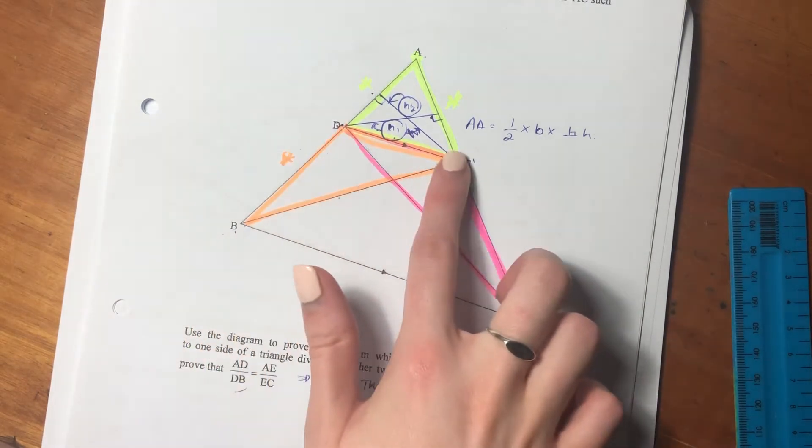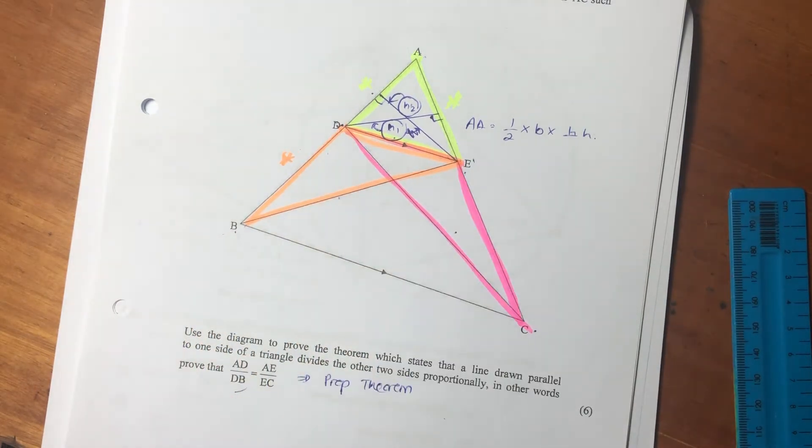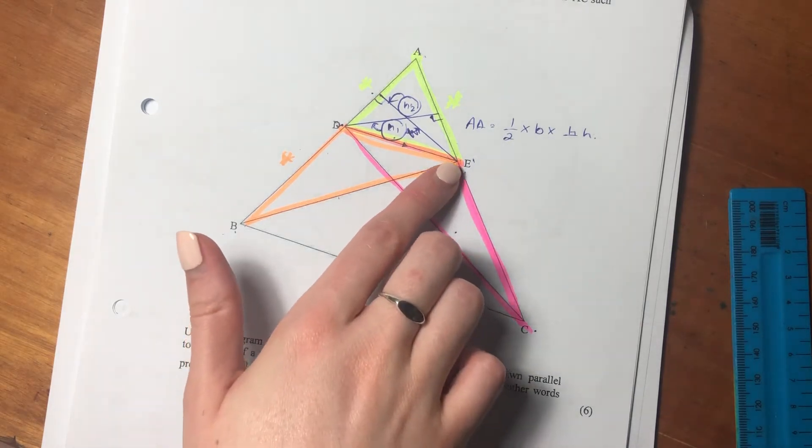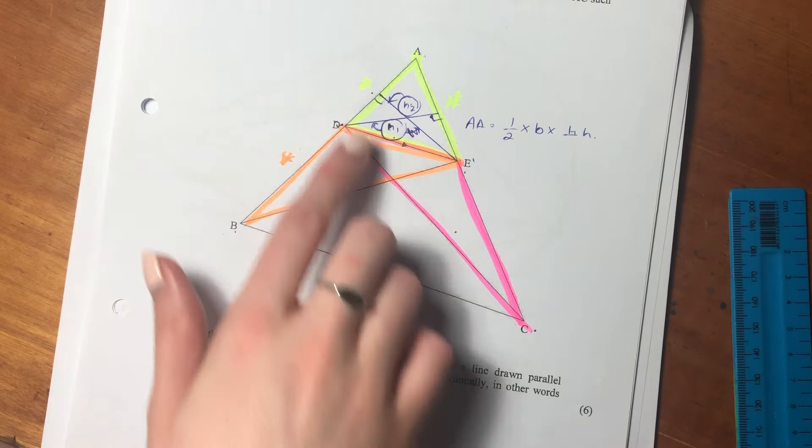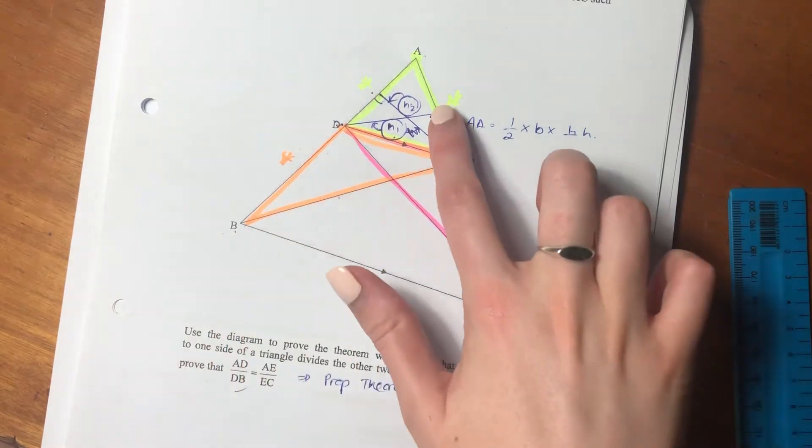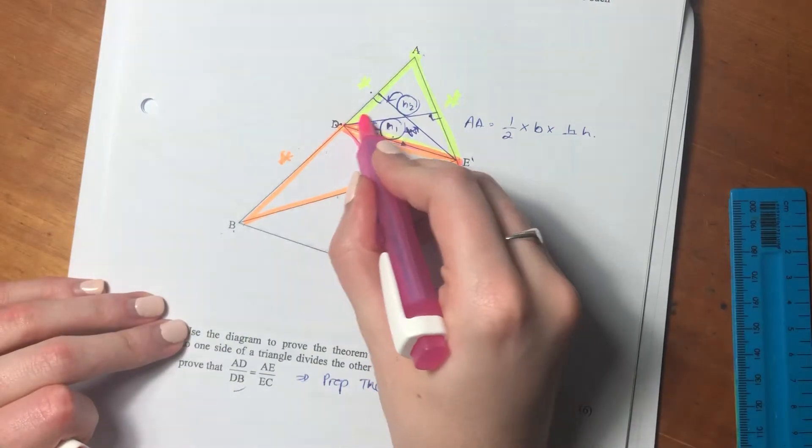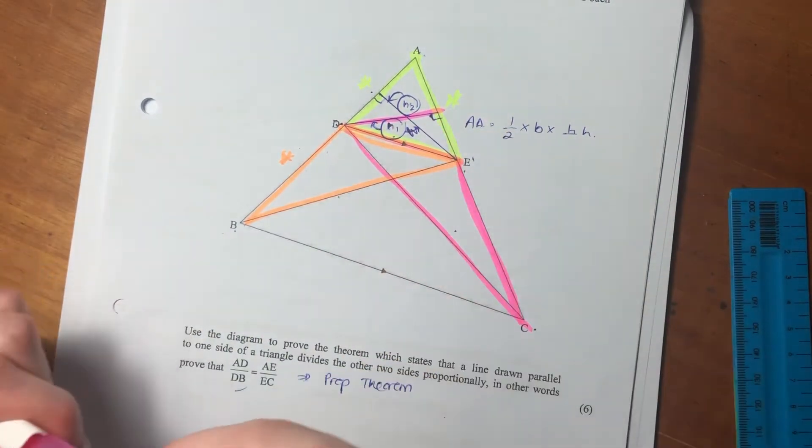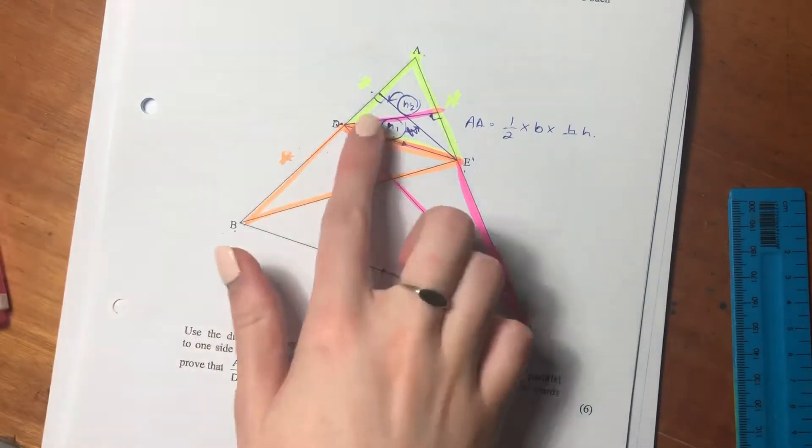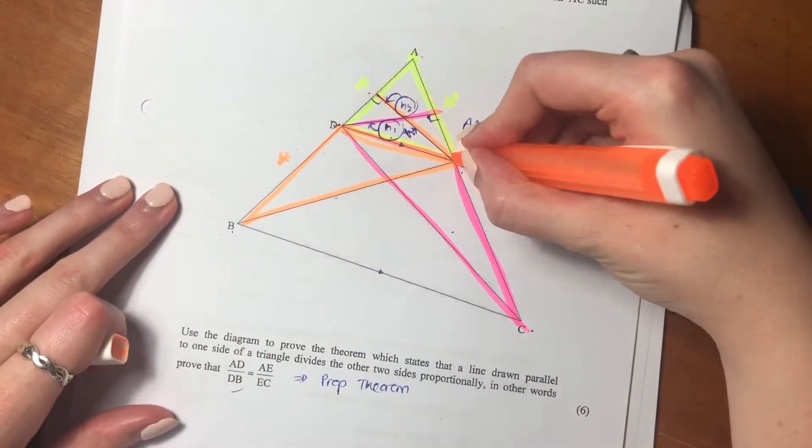But we see that these triangles here are not right-angled triangles. So to get the perpendicular height, we have to get the height outside of the triangle. And for this one, we have to get that height. So I'm just going to color in the heights to link to the triangles that we're looking at, just so that you don't get confused.